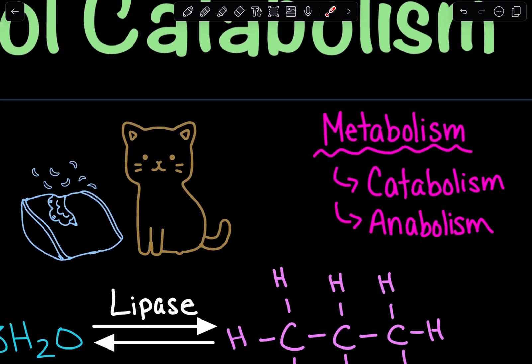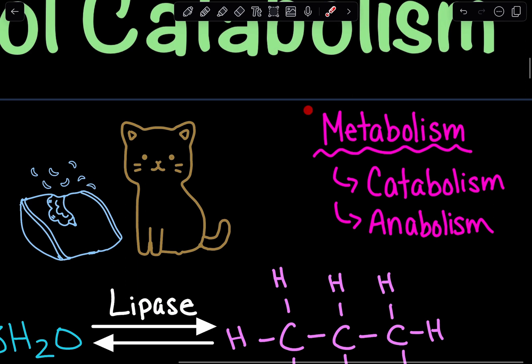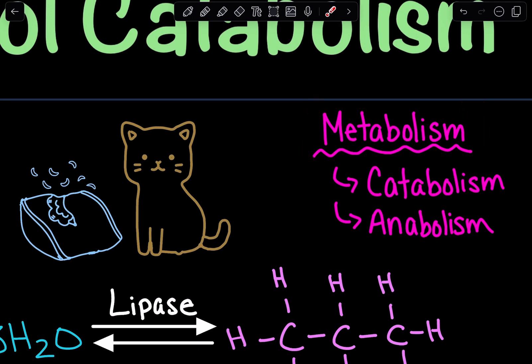When we think about metabolism, it encompasses all the processes that are going to occur in a cell — whether it's breaking something down or building something. Metabolism can be broken down into two components: catabolism and anabolism.